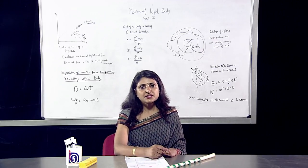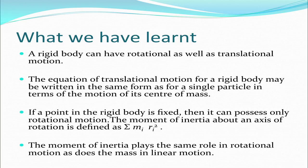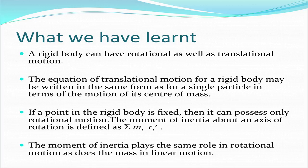In summary, a rigid body can have rotational as well as translational motion. The equation of translational motion for a rigid body may be written in the same form as for a single particle in terms of the motion of its center of mass. If a point in the rigid body is fixed, it can possess only rotational motion. The moment of inertia about an axis of rotation is defined as summation of miri², and plays the same role in rotational motion as mass does in linear motion. Thank you.